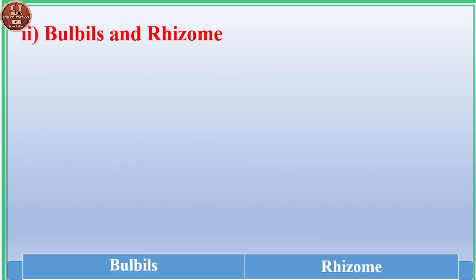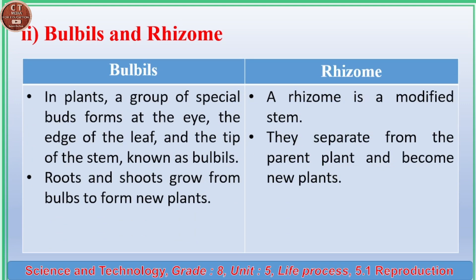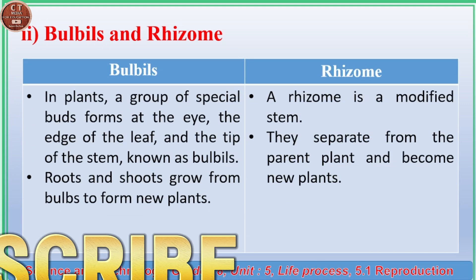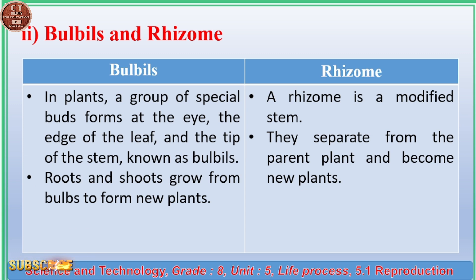(ii) Bulbils and Rhizome. In plants, a group of special buds forms at the axil, the edge of the leaf, and the tip of the stem — known as bulbils. Roots and shoots grow from bulbils to form new plants. A rhizome is a modified stem; rhizomes separate from the parent plant and become new plants.